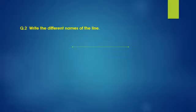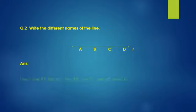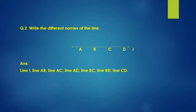Question 2. Write the different names of the line. Answer. Line L, line AB, line AC, line AD, line BC, line BD, line CD.